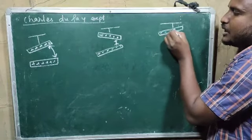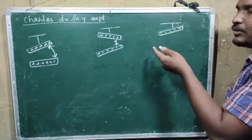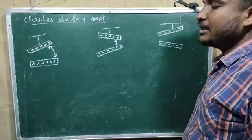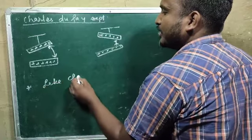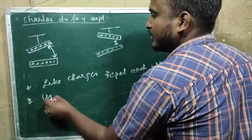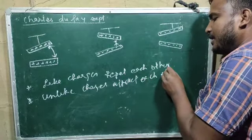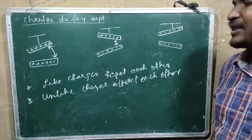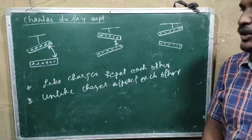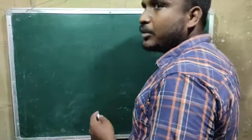Again, in the third experiment, he took a plastic rod and silk cloth. When he rubbed them, plastic rod acquired negative charge and silk cloth acquired positive charge. The silk cloth was thrown away and the plastic rod was kept. Again, another plastic rod and silk cloth were taken, silk cloth was thrown away, and the plastic rod with negative charge was kept. Now, what conclusion can we draw? Like charges repel each other and unlike charges attract each other. Up to class 10th level we have studied that like charges repel and unlike charges attract, but how they repel and attract was confirmed by this experiment, called Charles Dufay's experiment.